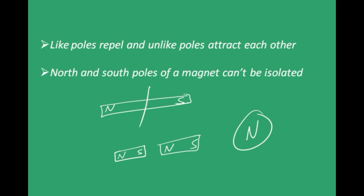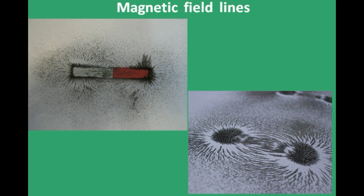North and south poles of a magnet cannot be isolated — in other words, magnetic monopoles do not exist. When you sprinkle iron filings over a sheet placed on a magnet, they automatically arrange themselves in a characteristic pattern that gives an idea of the magnetic field.